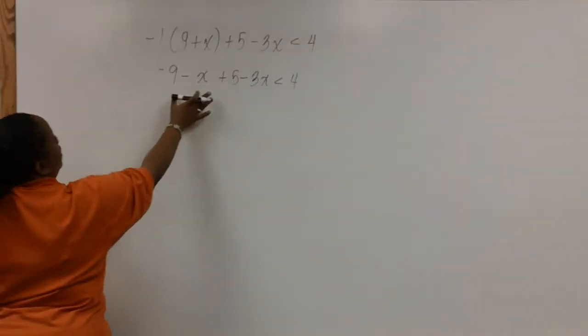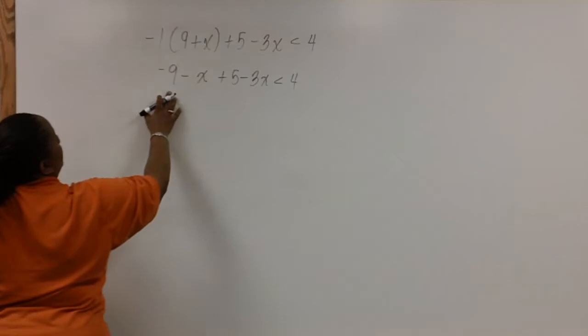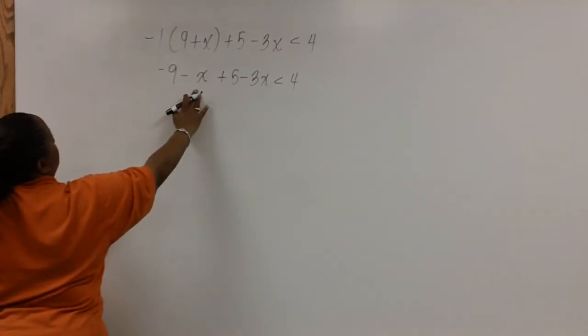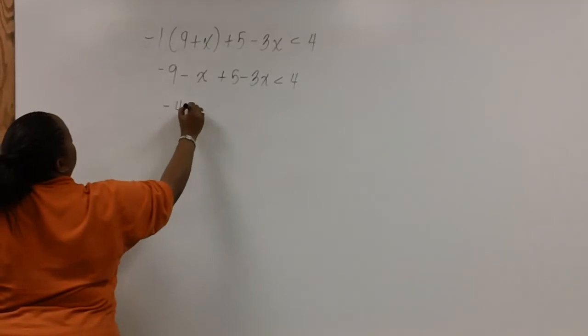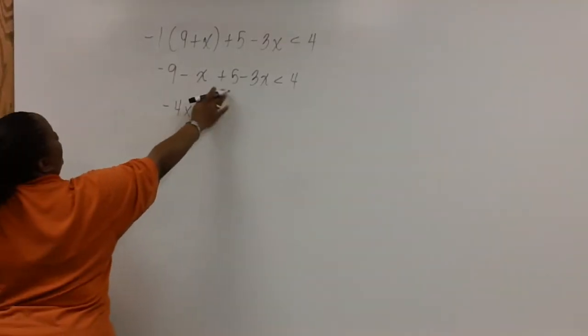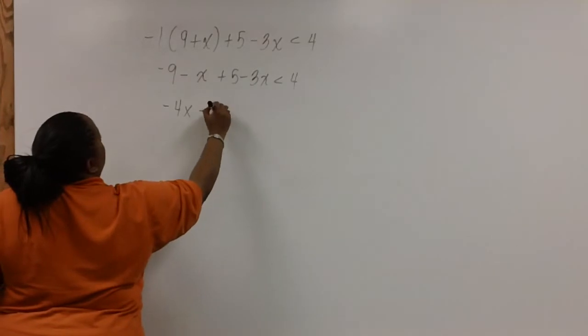Notice that we have some like terms to combine on the left side. Negative x plus negative 3x is negative 4x. And negative 9 plus 5 is negative 4.